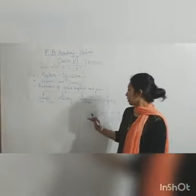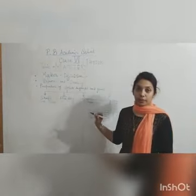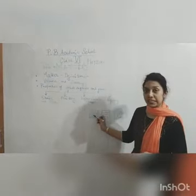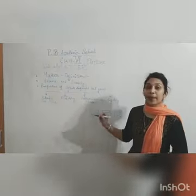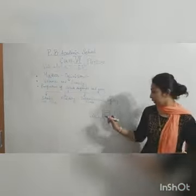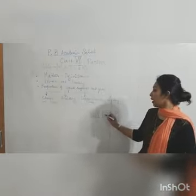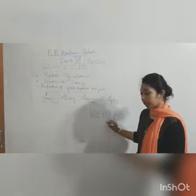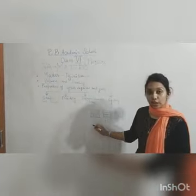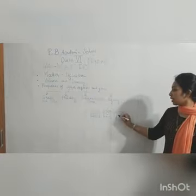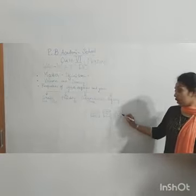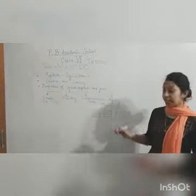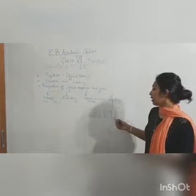In a solid, the molecules are densely packed — meaning there are many molecules very close together, so the density is maximum in case of solid. In case of liquid, the molecules are a bit farther from each other, so the density in liquid is less than that of the solid. In case of gas, there is so much space between the molecules, so the density in gases is minimum.